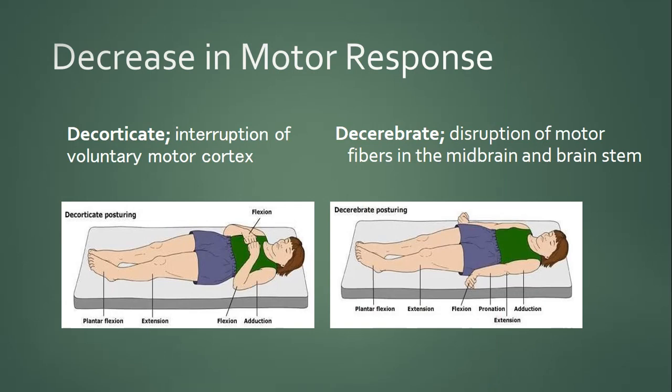Decreased motor response manifests in two forms: decorticate and decerebrate posturing. Decorticate posturing results from interruption of the voluntary motor cortex, with flexion of the arms, extension of the knees, and plantar flexion. Decerebrate posturing is caused by disruption of motor fibers in the midbrain and brainstem, with extended arms, flexed hands, extension of the knees, and plantar flexion.